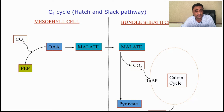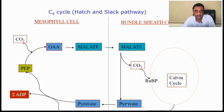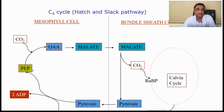The pyruvate goes back to the mesophyll cell. In the mesophyll cell, pyruvate undergoes dikinase activity, and as a result, 2 molecules of ATP are utilized and the CO2 acceptor PEP is regenerated. This is how the entire Hatch and Slack cycle is completed.